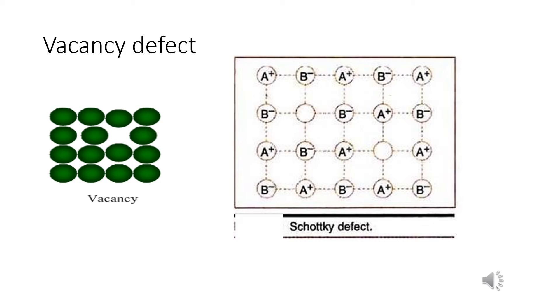In this defect, some of the lattice points in a crystal are unoccupied. That is, the points which are unoccupied are called lattice vacancies. For example, sodium chloride crystal.